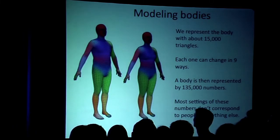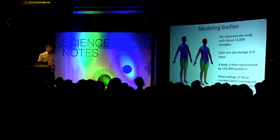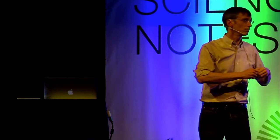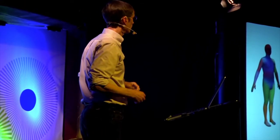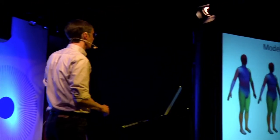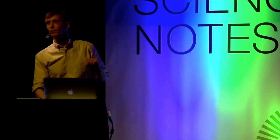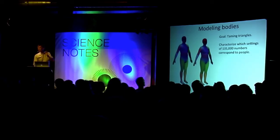Now, if we want to represent the whole body, we use about 15,000 triangles. If you can apply nine numbers to each of the triangles, that means there's about 135,000 numbers to describe the body shape of a person. Now, most of the settings of those 135,000 numbers don't correspond to people. Choose random 135,000 numbers, I guarantee you, you're not going to get the shape of a person. You're not going to get the shape of anything.